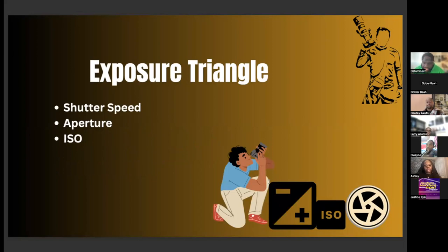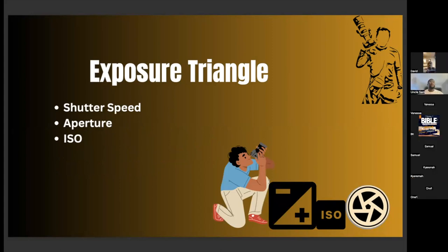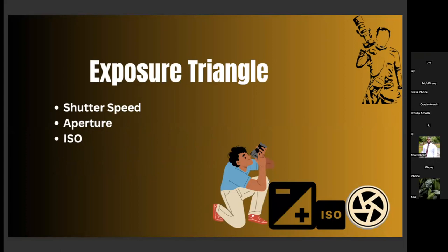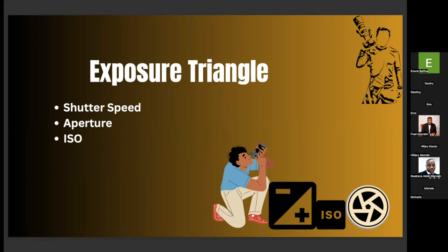Now we have something called the exposure triangle. The exposure triangle is essentially these three things that control the lighting of your camera: your shutter speed, your aperture, and your ISO.